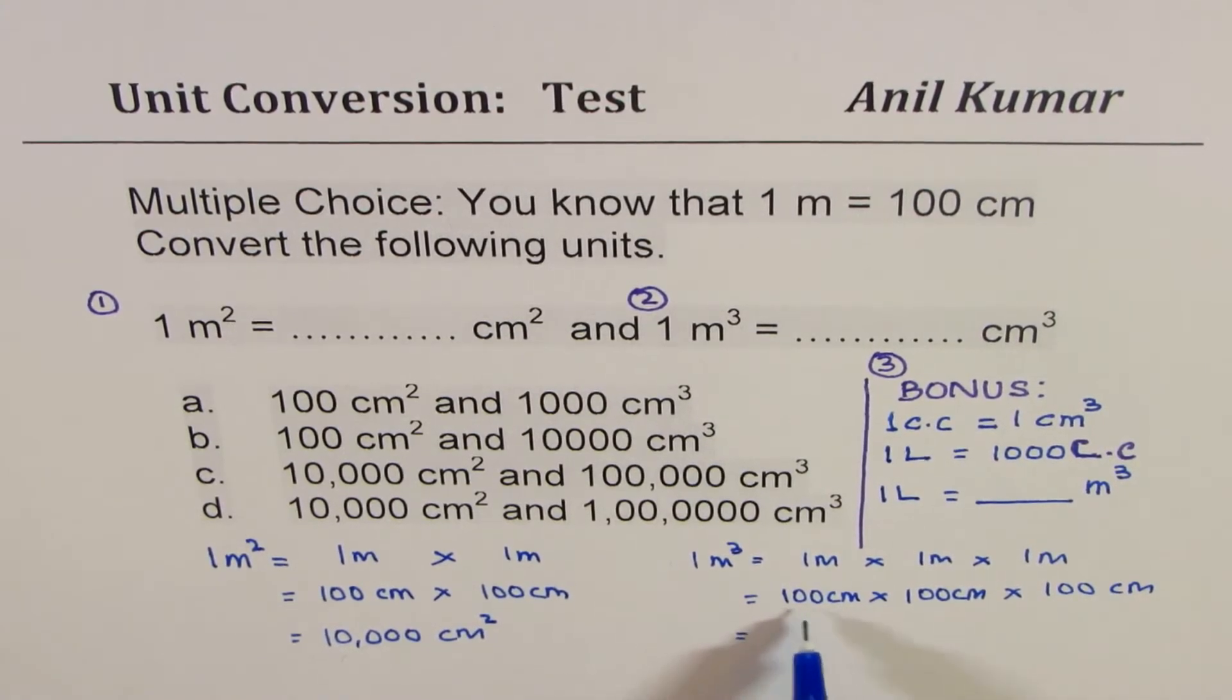So, how many zeros do we have? Two, four, and six. That is one million. That is one thousand thousand or one million centimeter cube.